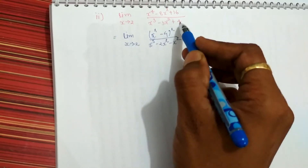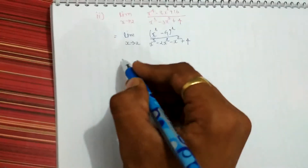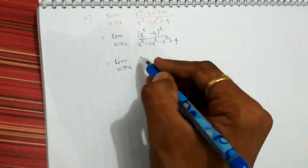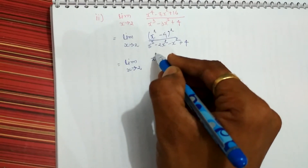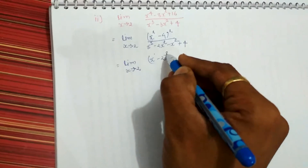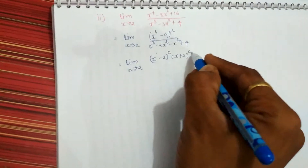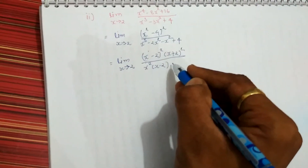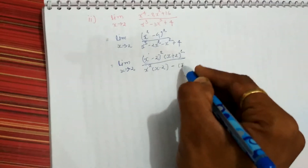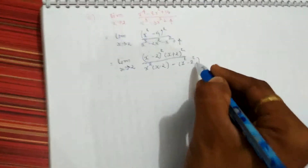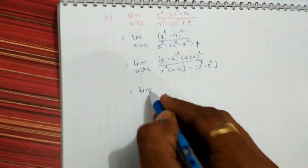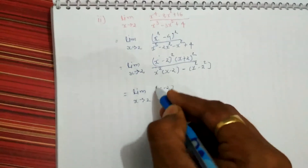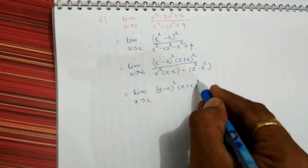As this term is set, write this term as it is. Now it will be limit x tends to 2. It will be x square times x minus 2 whole square times x plus 2 whole square. Here, you are having x square common, x minus 2, minus 1 common, x square minus 2 squared. So it will be limit x tends to 2: x minus 2 whole square times x plus 2 whole square.